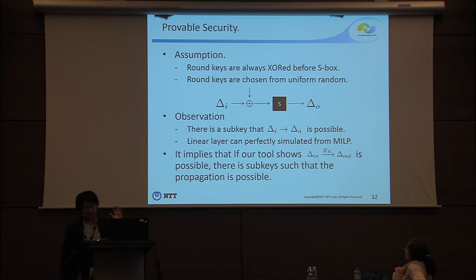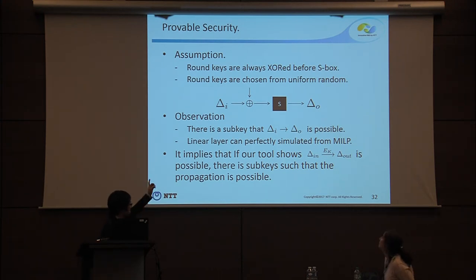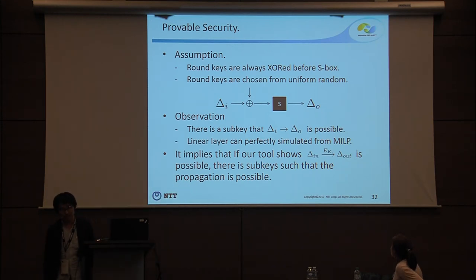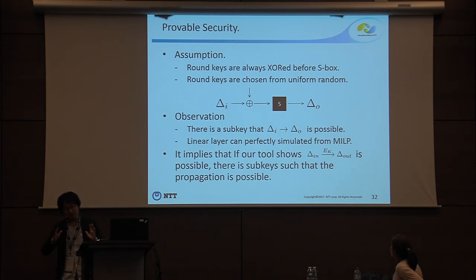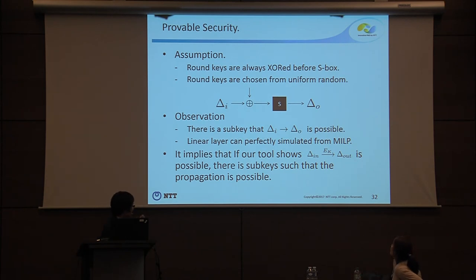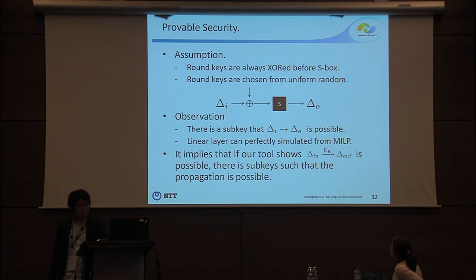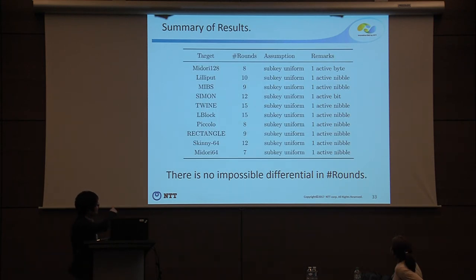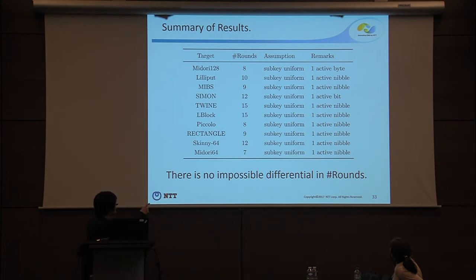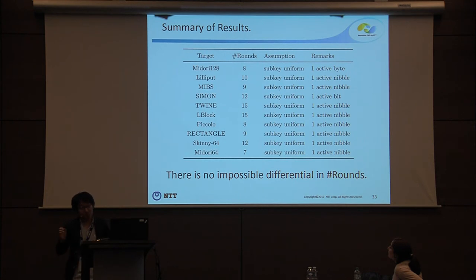The key observation is: we first focus on the nonlinear layer. If delta-I and delta-O is a possible entry in the differential distribution table, then there always exists a subkey for which this propagation is possible. And MILP can perfectly simulate propagation through the linear layer. From these observations, if our tool shows that delta-in to delta-out is possible, there exists a subkey such that the propagation is possible. As a result, for Midori, SKINNY, RECTANGLE, and others, by exhaustively searching one-byte-active impossible differentials, we can show that 8 rounds are provably secure under impossible differential in this search space.